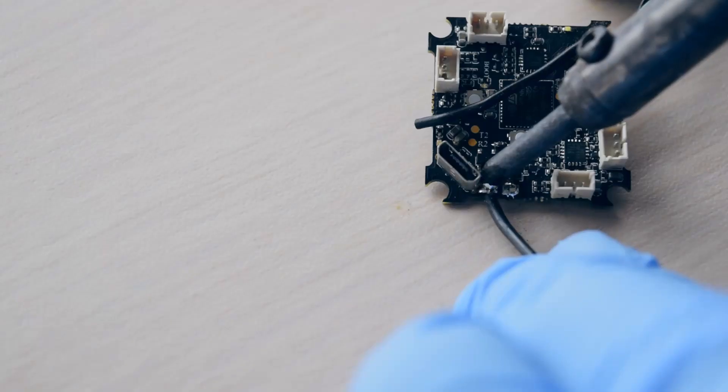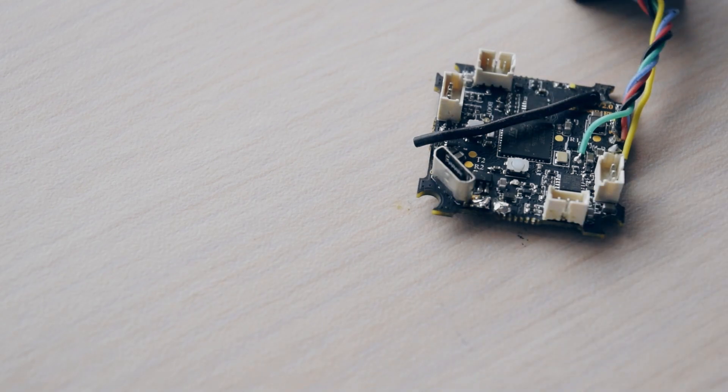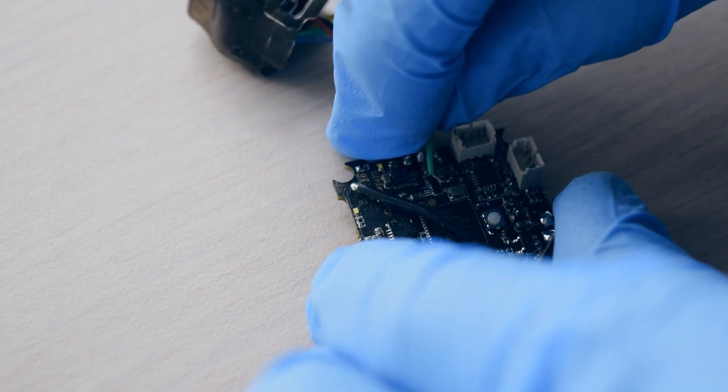With that, I unsoldered the old battery plug because I'm going to be swapping it out for an XT30. I also undid all of the camera wires that haven't already broken off.